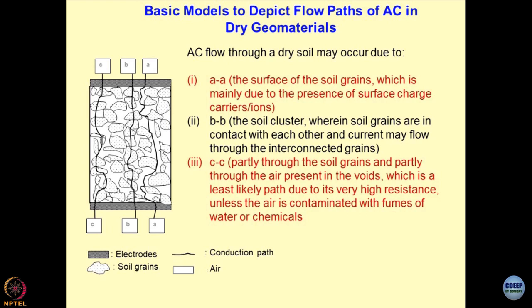The A-to-A path is along the surface of the soil grains, mainly due to the presence of surface charges. Coarse grained particles do not have surface charge; fine grained particles do. We can utilize this concept in differentiating the material without sieve analysis, because sieve analysis and hydrometer analysis have their own limitations. The B-B path is through the soil cluster wherein soil grains are in contact with each other and current flows through the interconnected grains.